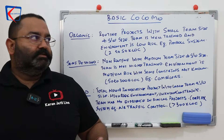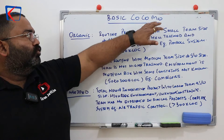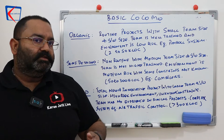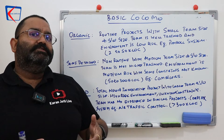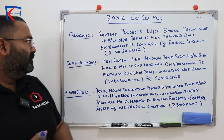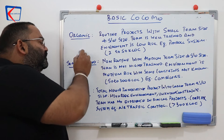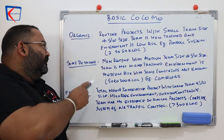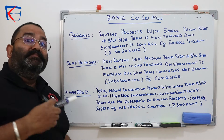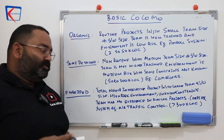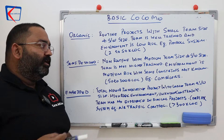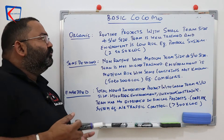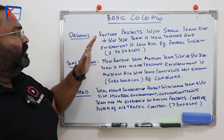The COCOMO model — whether it is basic, intermediate, or advanced — categorizes your projects into three categories: organic project, semi-detached project, and embedded project.